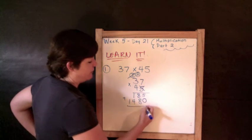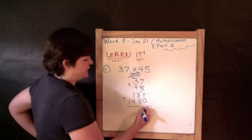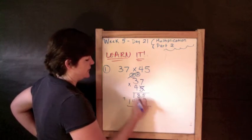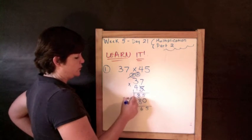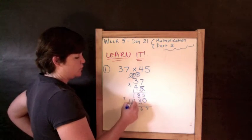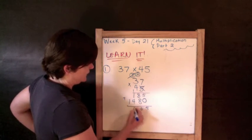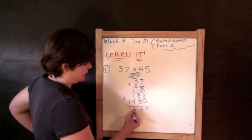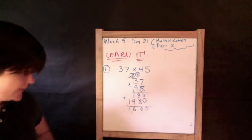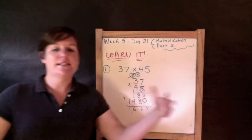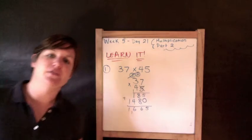Now we add them to get our final product. 5 plus 0 is 5. 8 plus 8 is 16. 1 plus 1 is 2. 2 plus 4 is 6. Bring down the 1. So your answer is 1,665.